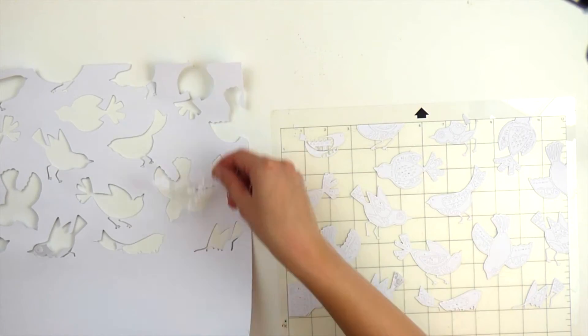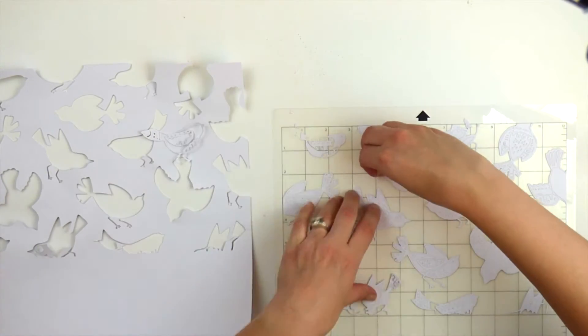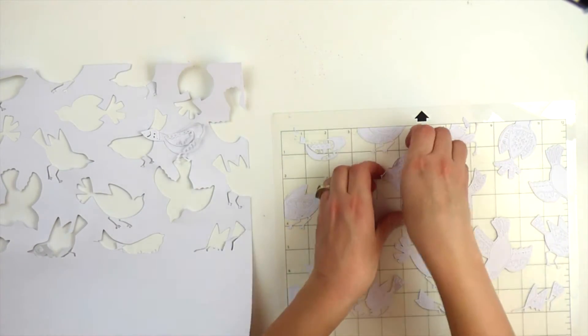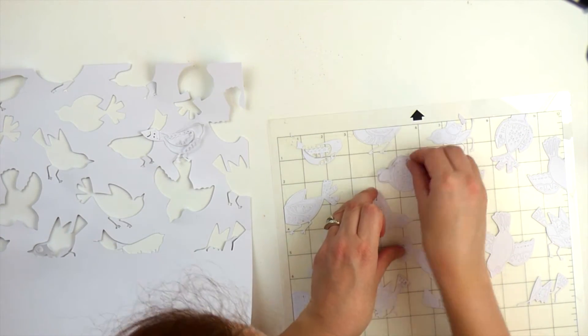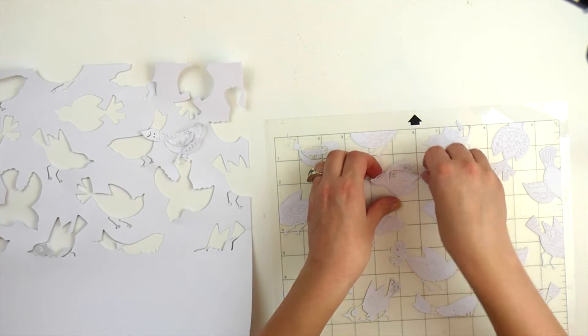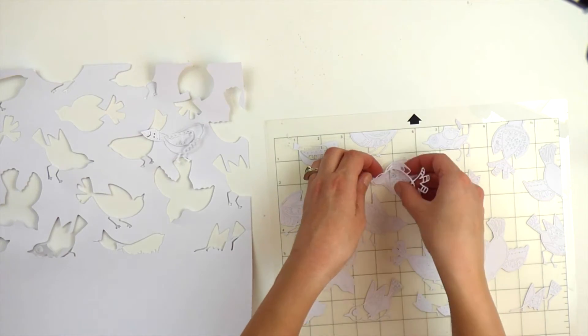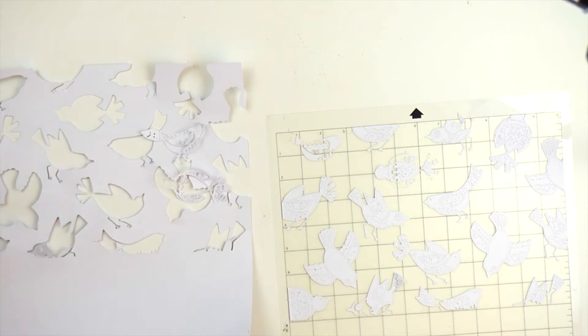All right so once you have all of your birds peeled off then pick the pattern papers that you want to use to back the birds. I'm just using all of the pattern papers I could find from the Studio Calico Sonnet kits.